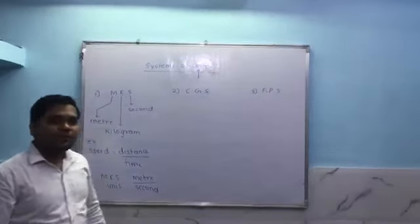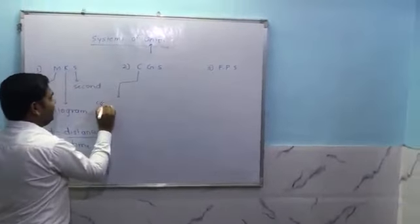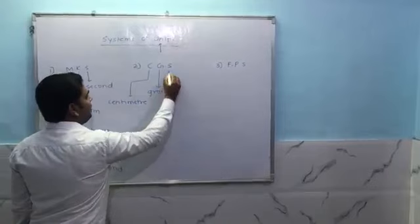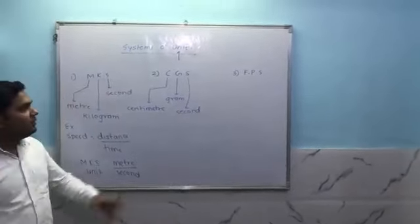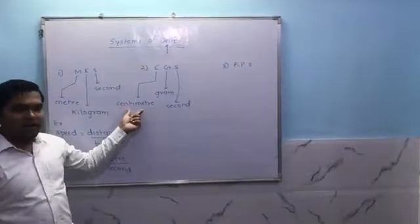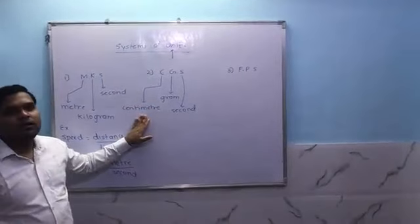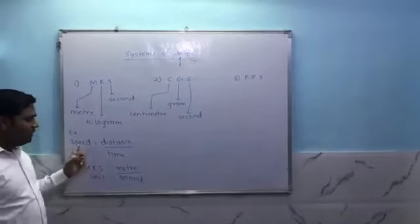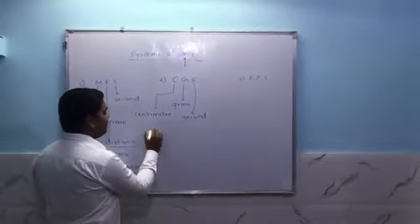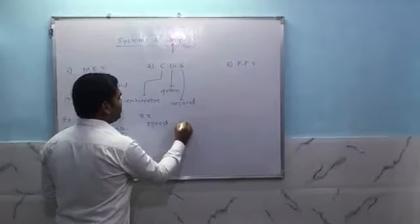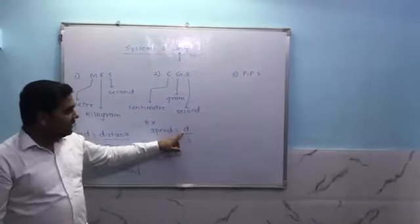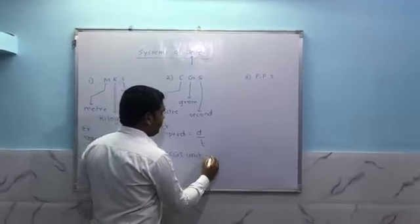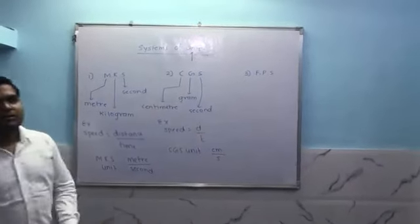The second system is CGS. C stands for centimeter, G stands for gram, and S stands for second. In CGS, length is expressed in centimeters, mass in grams, and time in seconds. Same example — speed is distance upon time. Distance is in centimeters, time is in seconds. So the CGS unit for speed is centimeter per second.